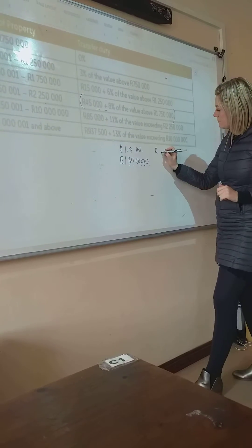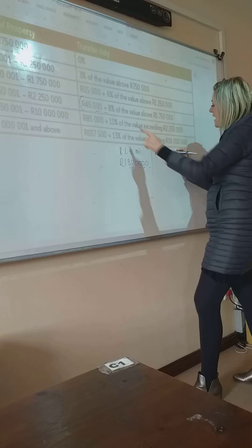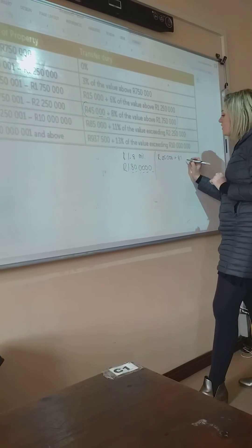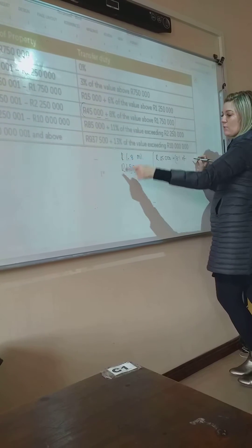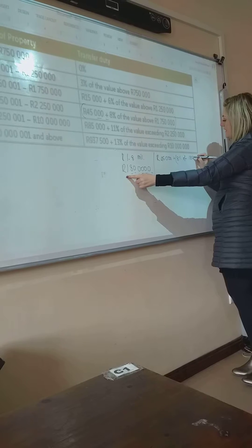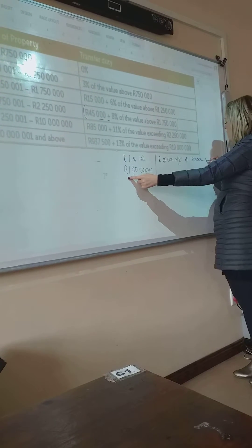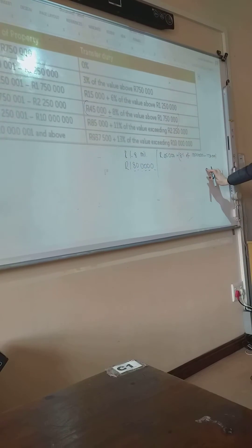So you're going to write it down. You're going to say 45,000 plus the 8% of the value above. Can you see you're going to do the same 8% off? So you're going to say what? 1.80 million, 1.8 million minus 1.75,0,0,0,0,0. Can you see we're doing this exact same thing?